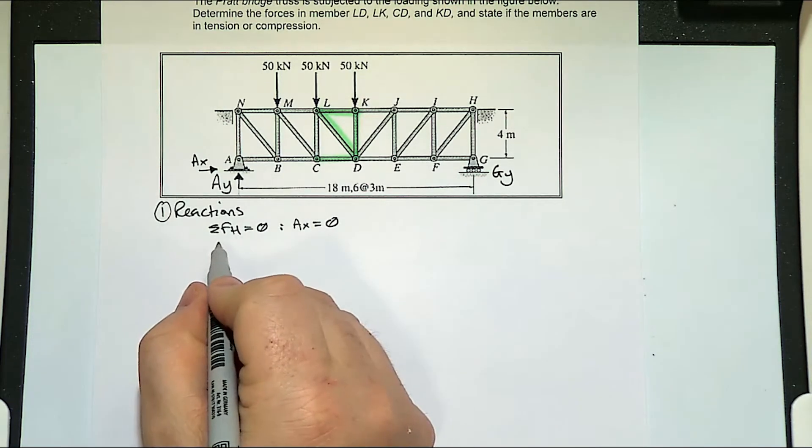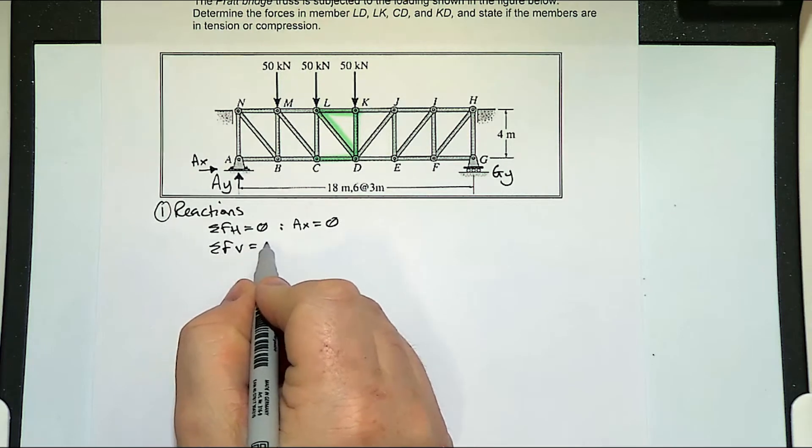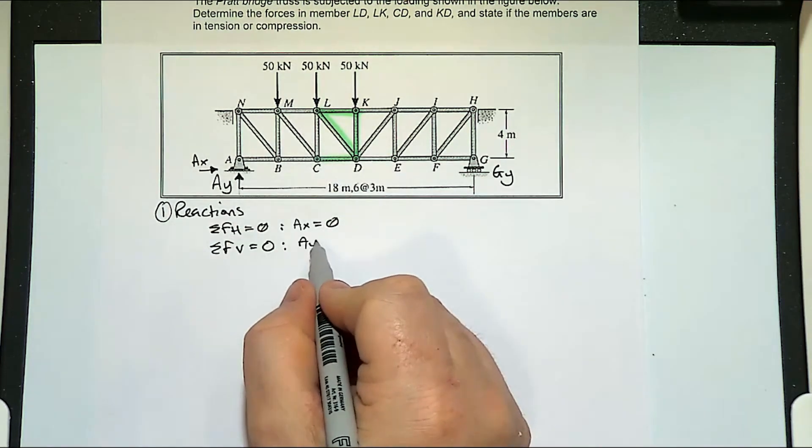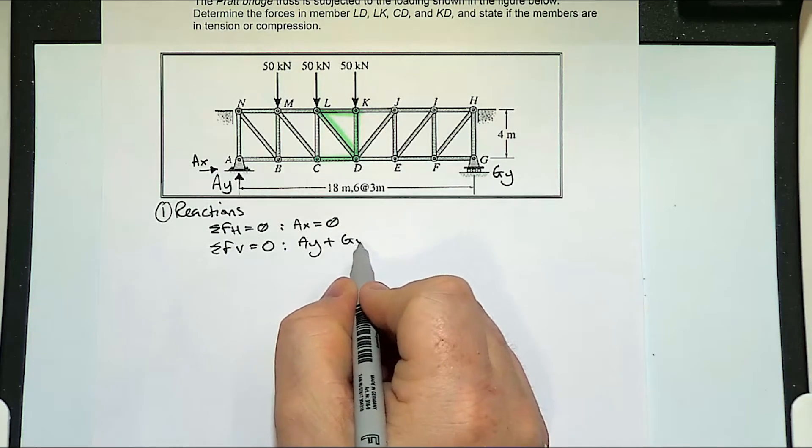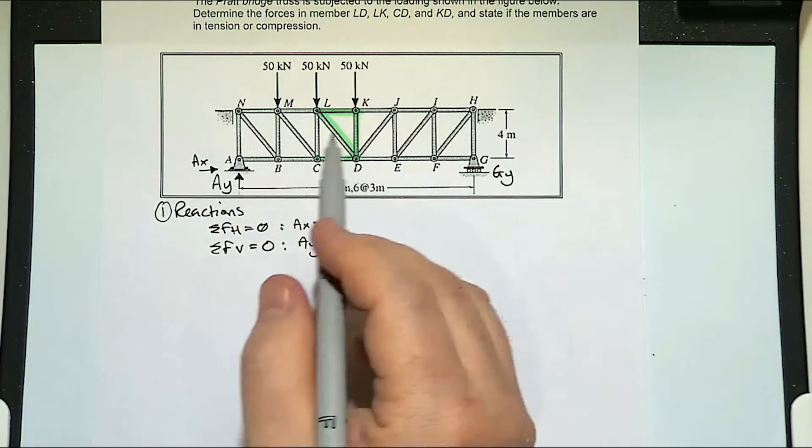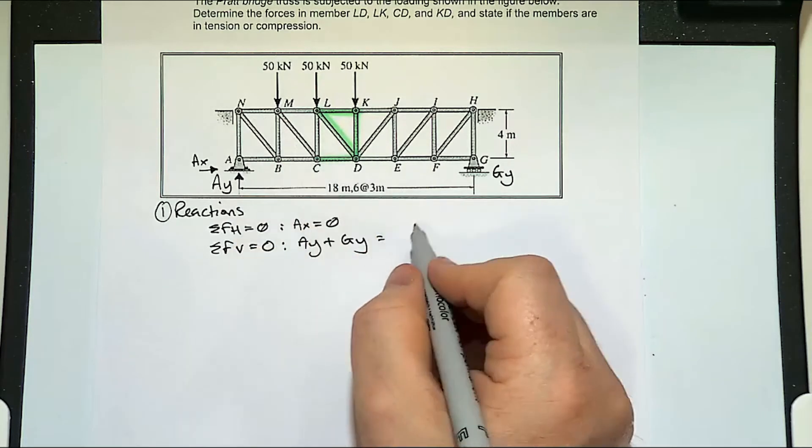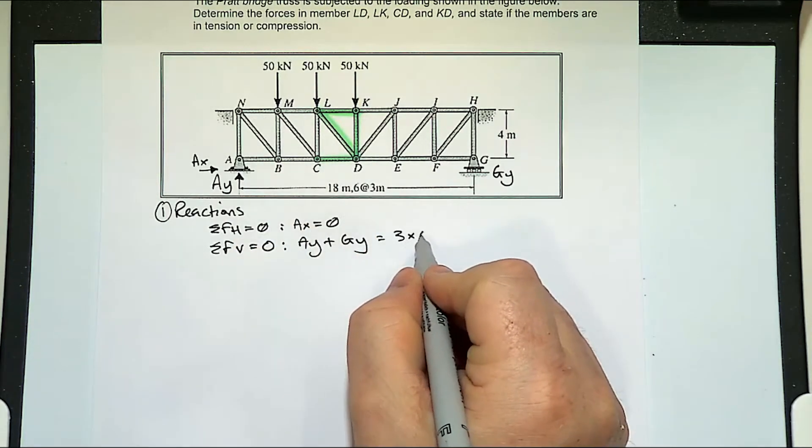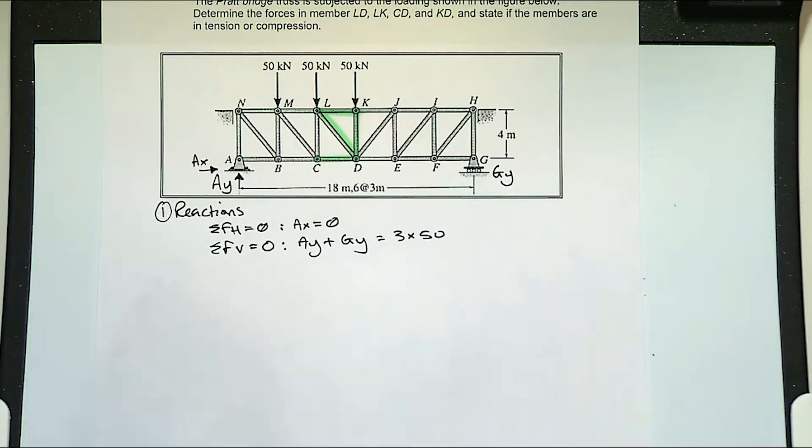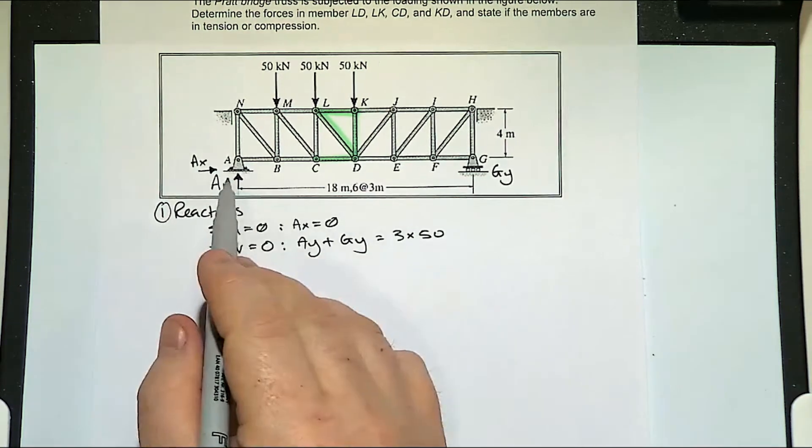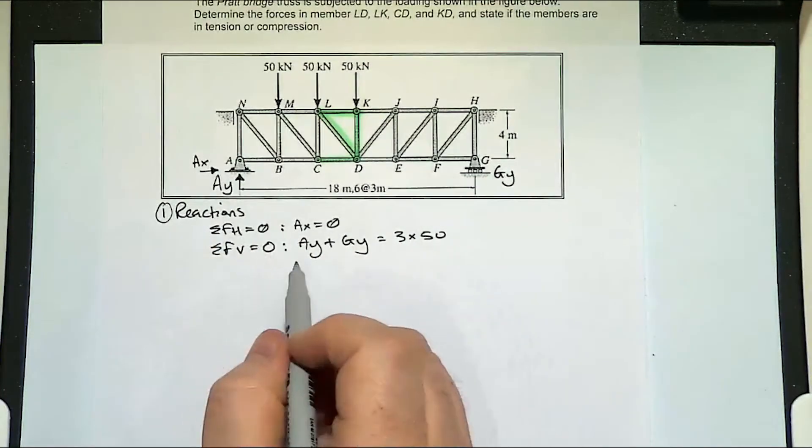If we looked at our forces vertically, we've got A_y plus G_y going upwards. Coming downwards, we've got these three fifties. We've got two unknowns, so we do have to take moments around one of the reactions to get another formula.